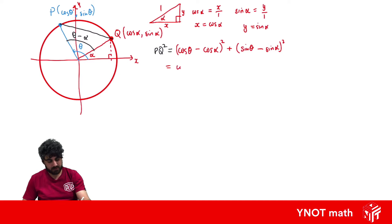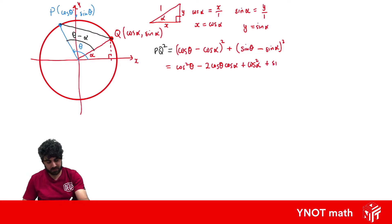Expanding this out: we get cos²θ minus 2 cos θ cos α plus cos²α, plus sin²θ minus 2 sin θ sin α plus sin²α.